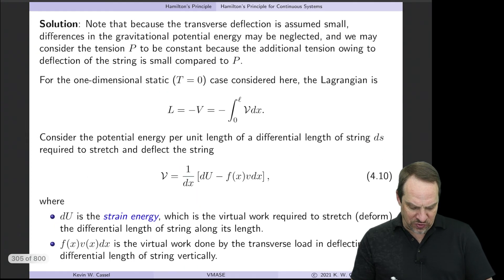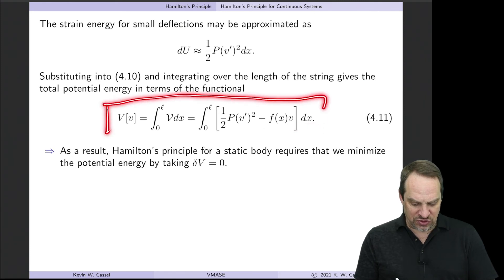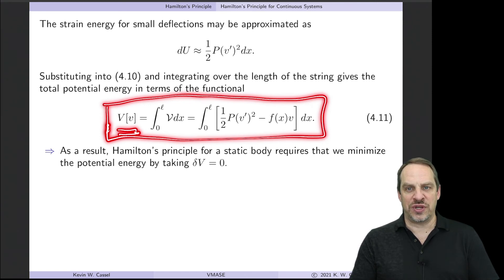So now we can substitute that in for dU back here. And then remember we had this minus F times V dX. So substituting that in, here's the 1 half P times V prime squared times dX. And then the minus F times V dX. This is our functional for the potential energy. This is the total potential energy of the string. And for statics problems, the physical principle, as we see in here in Hamilton's principle, is to determine the shape V of X that minimizes the total potential energy of the string.